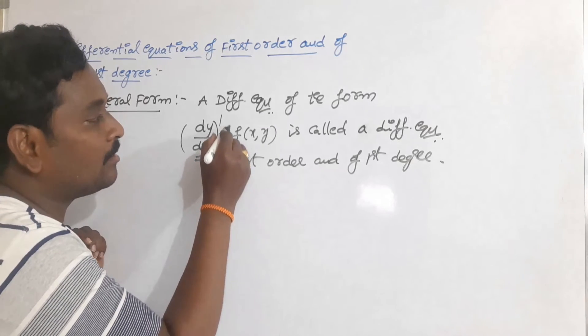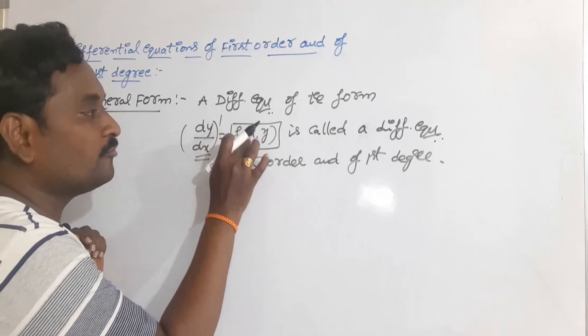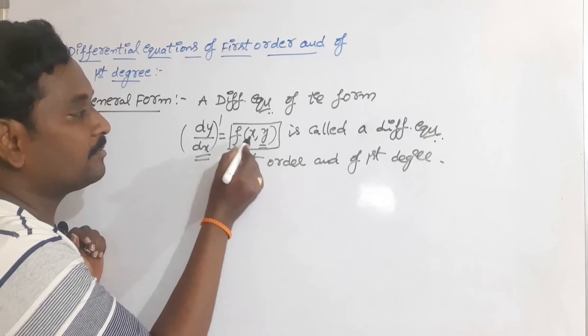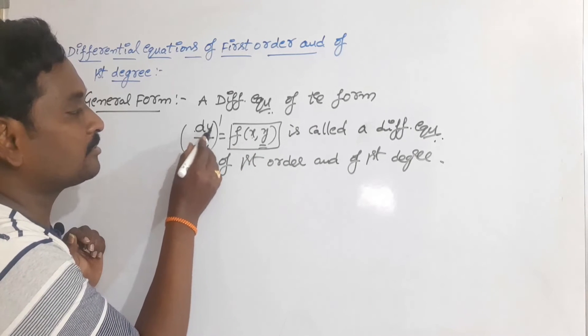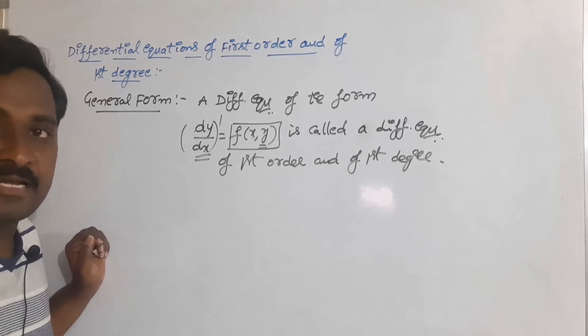Here the right hand side term f(x,y) means it is a function in the two variables x and y. In general, y is the dependent variable and x is the independent variable. Here also we have dy/dx, so y is dependent variable and x is independent variable.